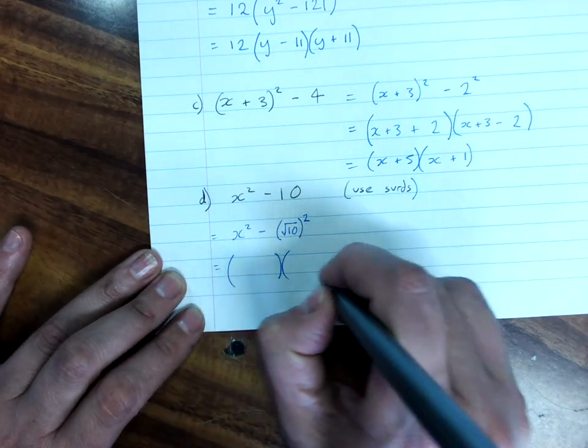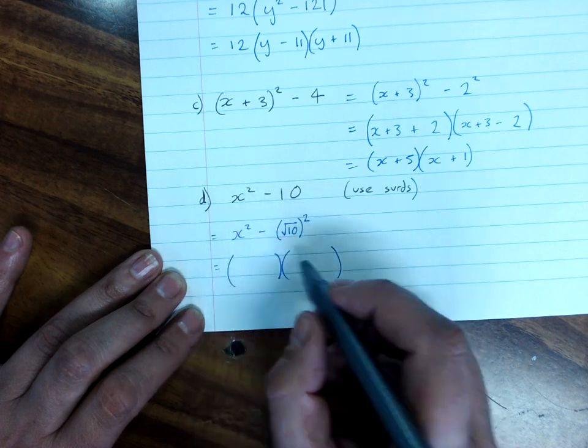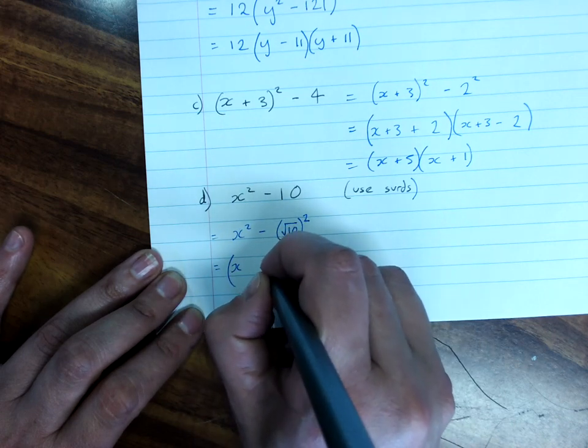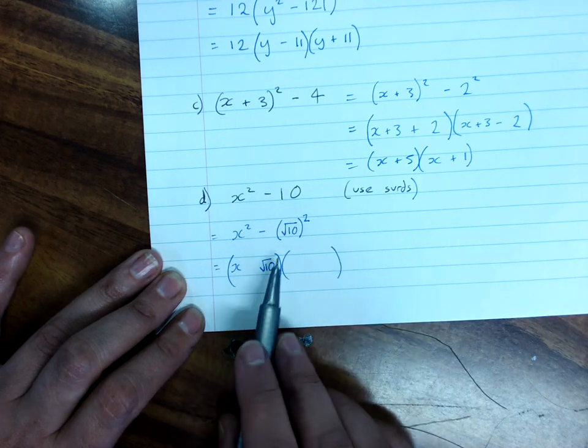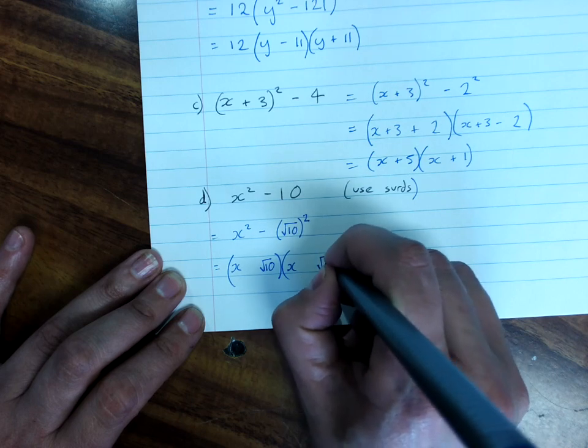And all I need to be able to do to factorize a difference of perfect squares is to put the square root of each term in the brackets. And so, we'll end up with the square root of 10 as the second term in each brackets.